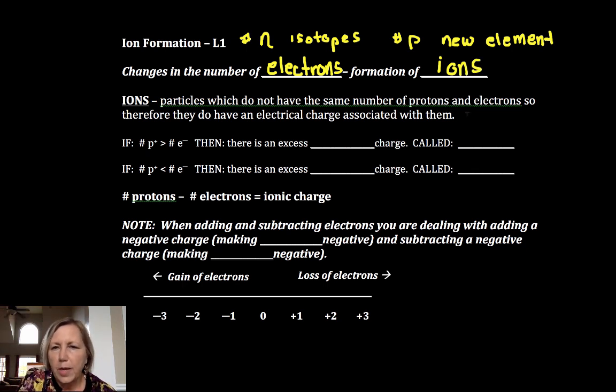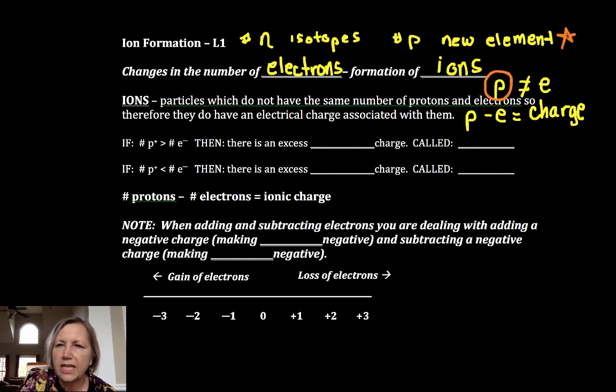So protons minus electrons are equal to the charge. When you have ions my protons are not equal to my number of electrons. But here's the key: you don't form ions by changing protons. Protons change the element.